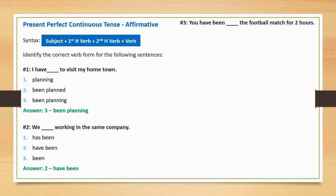Sentence three: 'You have been blank the football match for two hours.' Option one: watch. Option two: watching. Option three: watched. Correct option: watching. Full sentence: 'You have been watching the football match for two hours.'